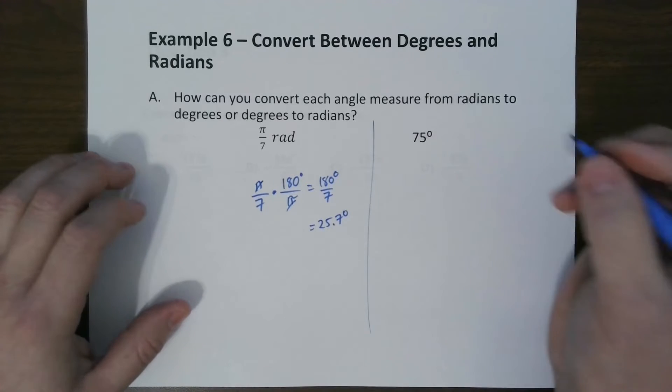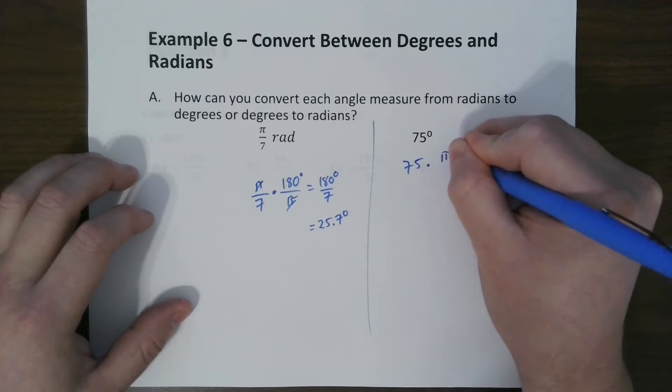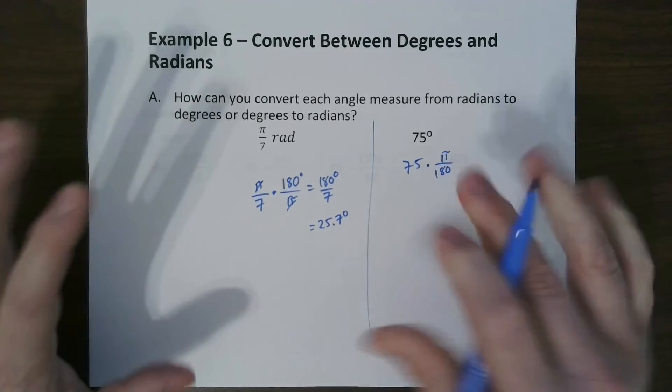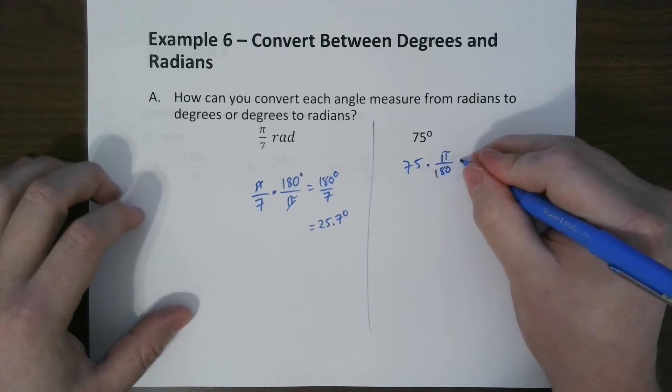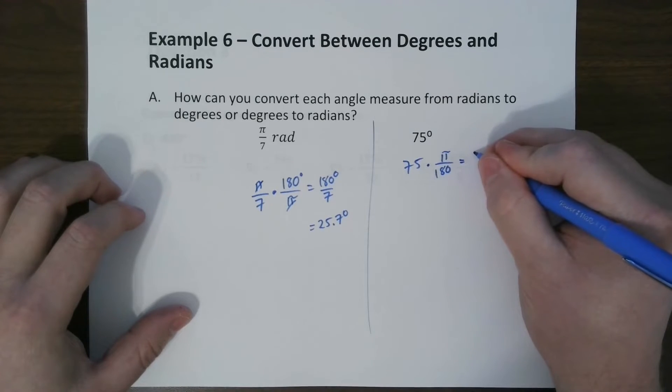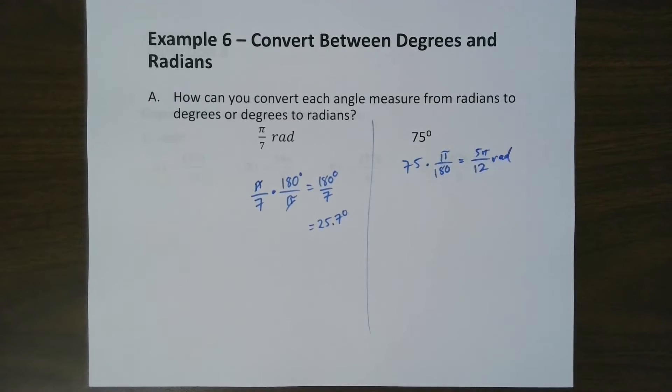So to go from degrees to radians, 75, we multiply by pi over 180. Now this one, we want to leave it as a fraction. So we just reduce these and we end up with 5 pi over 12 radians. That's how you convert back and forth.